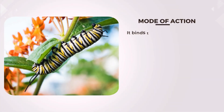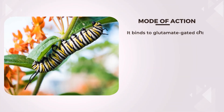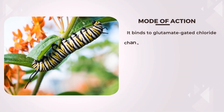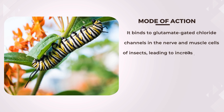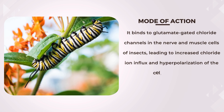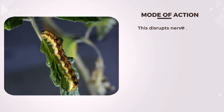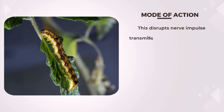Emamectin benzoate acts as a neurotoxin targeting the nervous system of insects. It binds to glutamate-gated chloride channels in the nerve and muscle cells of insects, leading to increased chloride ion influx and hyperpolarization of the cell membrane. This disrupts nerve impulse transmission and muscle function.